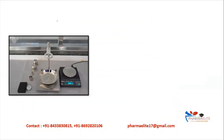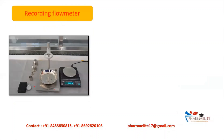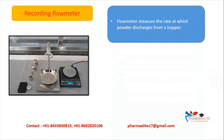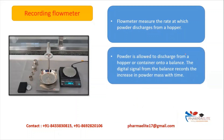The next parameter which measures flow property is the recording flow meter. Here you can see the apparatus: a clamp holds hoppers, and there is a container with a measuring balance below. The flow meter measures the rate at which powder is discharged from the hopper. Powder is allowed to discharge from the hopper into a balance, and the instrument records the increase in powder mass with time.